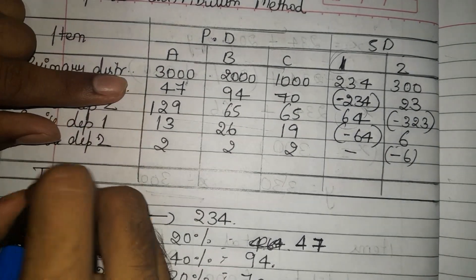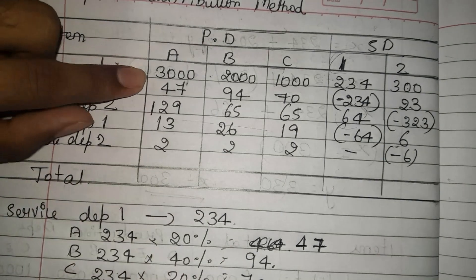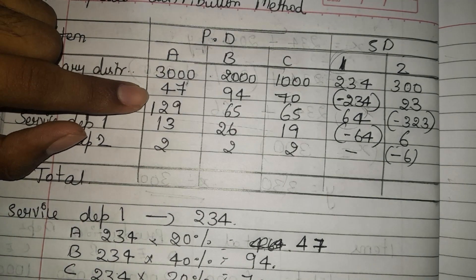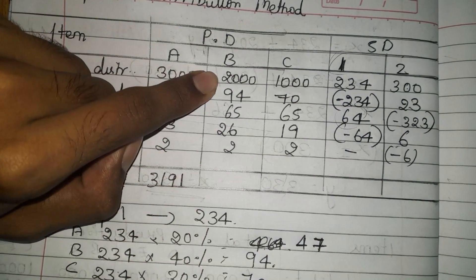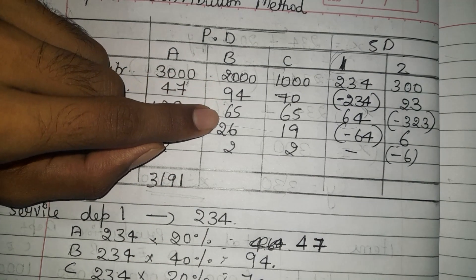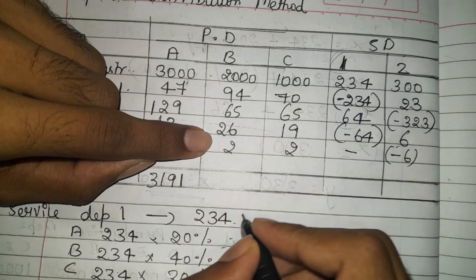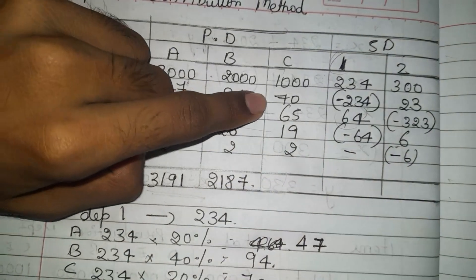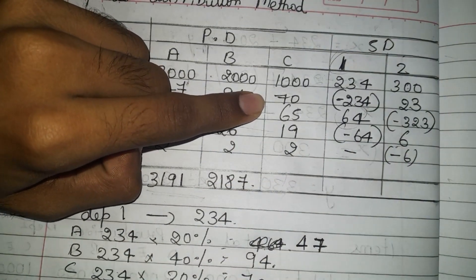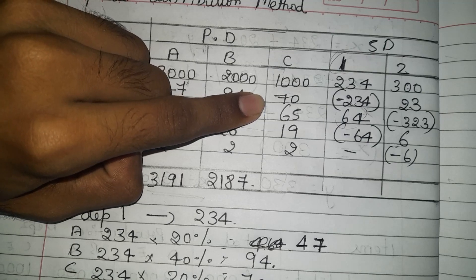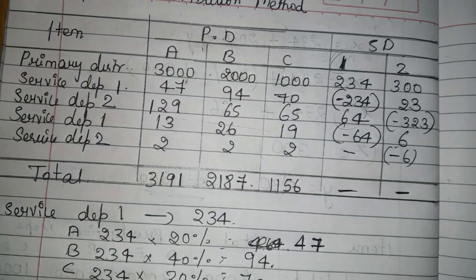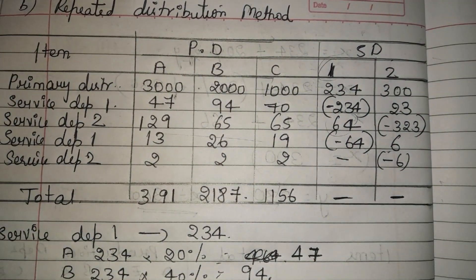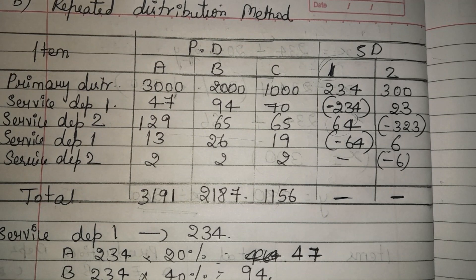Adding all distributions for the repeated method: A = 3000 + 47 + 129 + 13 + 2 = 3191. B = 2000 + 94 + 65 + 26 + 2 = 2187. C = 1000 + 70 + 65 + 19 + 2 = 1156. Service departments end at zero as all costs are distributed to production departments.